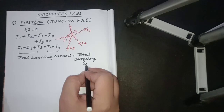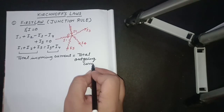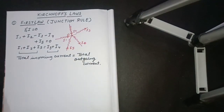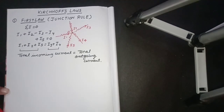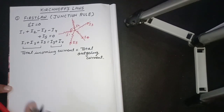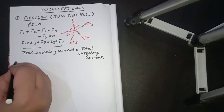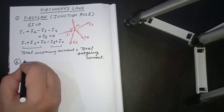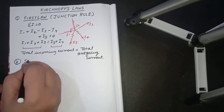Total incoming current is equal to total outgoing current. This law is widely used in solving the problems of circuits. So the first law is known as the junction rule. The second law is known as the loop rule.